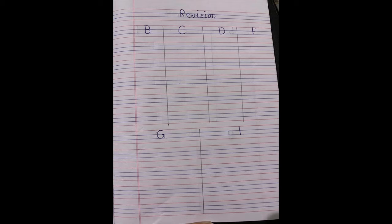On the first line, write 'Revision' in the center of the page, and in the margin write today's date. On the line below, write capital B, capital C, capital D, and capital F. Divide the page as I have done — after writing B, C, D, and F, leave five lines, then write capital G and capital I.